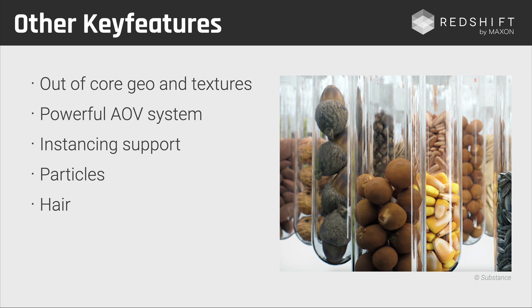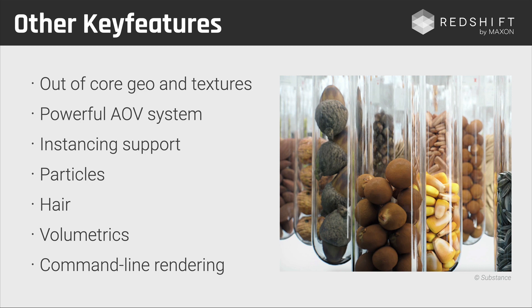Hair is also supported — if you have a character with hair, that's no problem. Or if you want to render a carpet with hair or fake grass, all of this is possible. Redshift also comes with support for volumetrics, so you can load any VDB sequence or file and render it using the Redshift volume shader. It also has a powerful environment object that allows you to create fog and very atmospheric environments. And lastly, command line rendering lets you distribute rendering over the network, using the full power of all your machines.